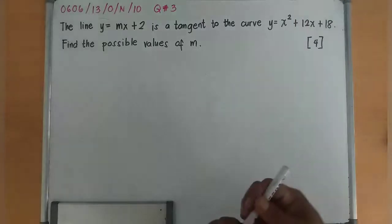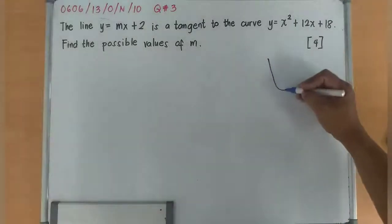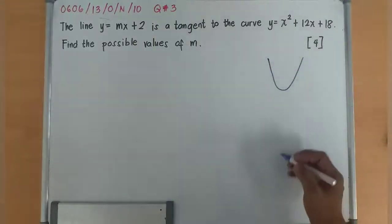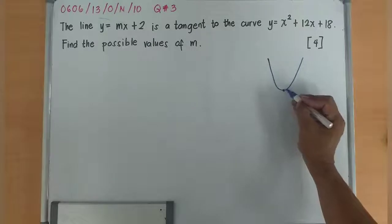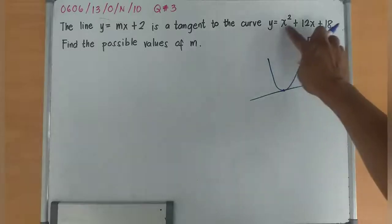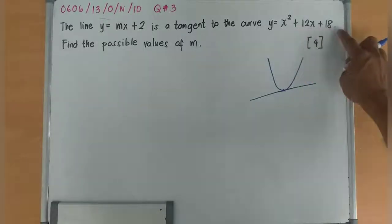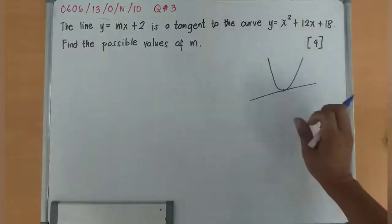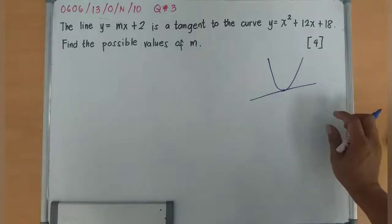So basically, I'll have a curve, then a point of tangency by this line. So this is y = x² + 12x + 18. This is y = mx + 2.